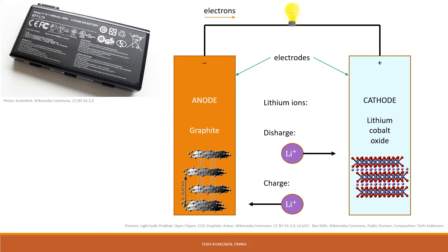In batteries, two different materials are used as electrodes: anode and cathode. Combining the electron-losing tendency of one substance with the electron-gaining tendency of another creates electric current. The external wire provides the pathway for the flow of negatively charged electrons from one electrode to the other outside of the battery, while the circuit is closed by the electrolyte's ions.